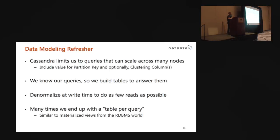So let's talk about data modeling. Cassandra limits us to queries that can scale across the cluster, so we always include a value for our partition key and optional clustering columns. We know our queries, so we follow a table-per-query pattern — building tables to answer queries, similar to materialized views from the relational database world. We denormalize at write time so that at read time we can do reads as efficiently as possible.